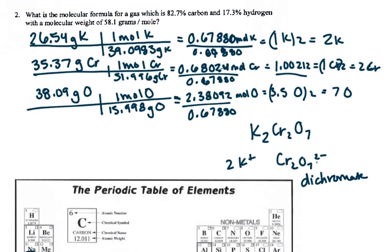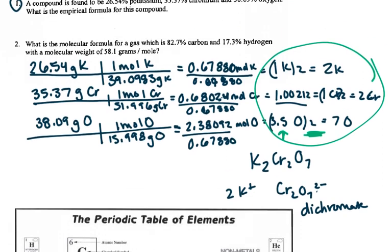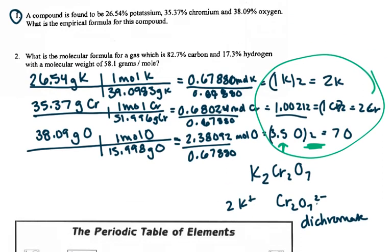If you did these calculations and they all wound up at a whole number, then great. You don't have to do this multiplying step. You only have to do this multiplying step if one of your numbers comes out to like a half. That is the empirical formula, potassium dichromate.